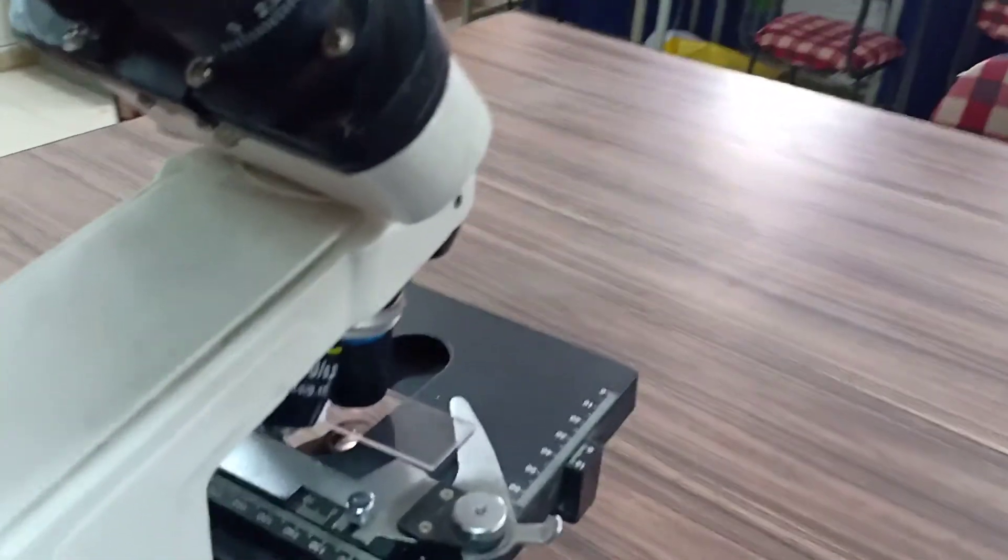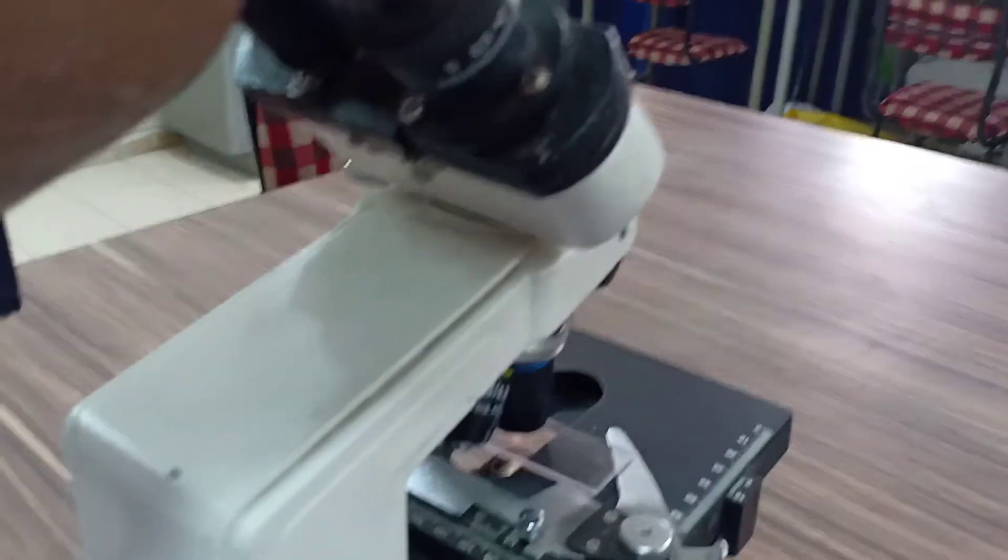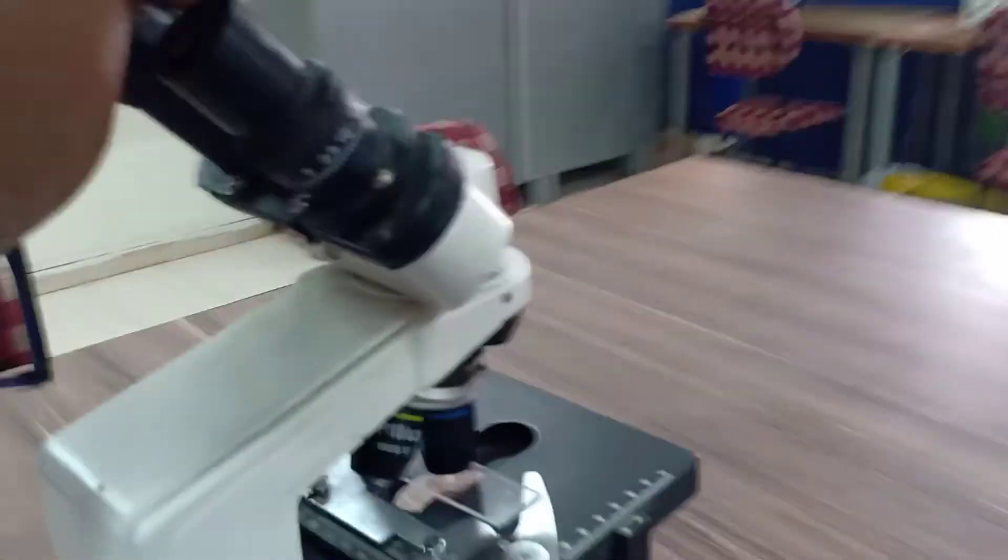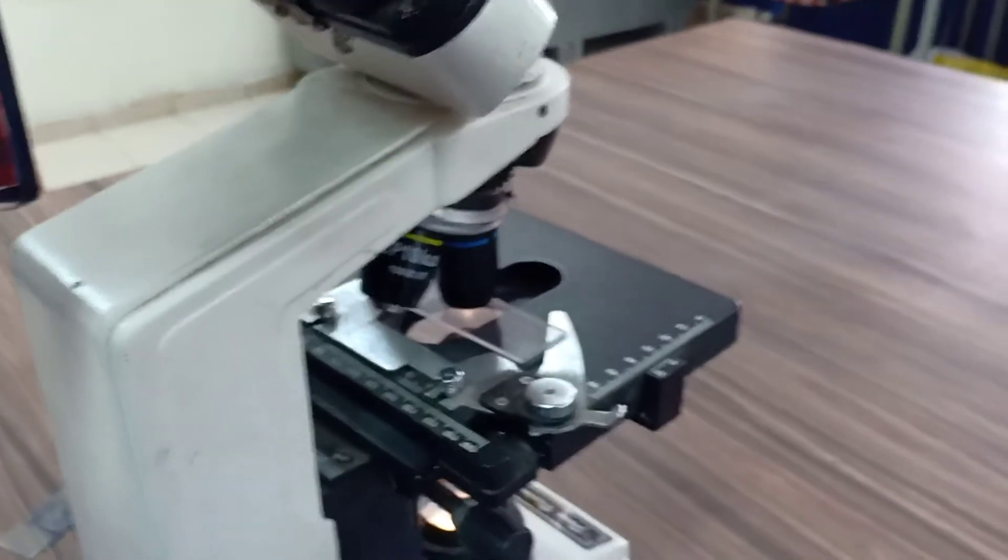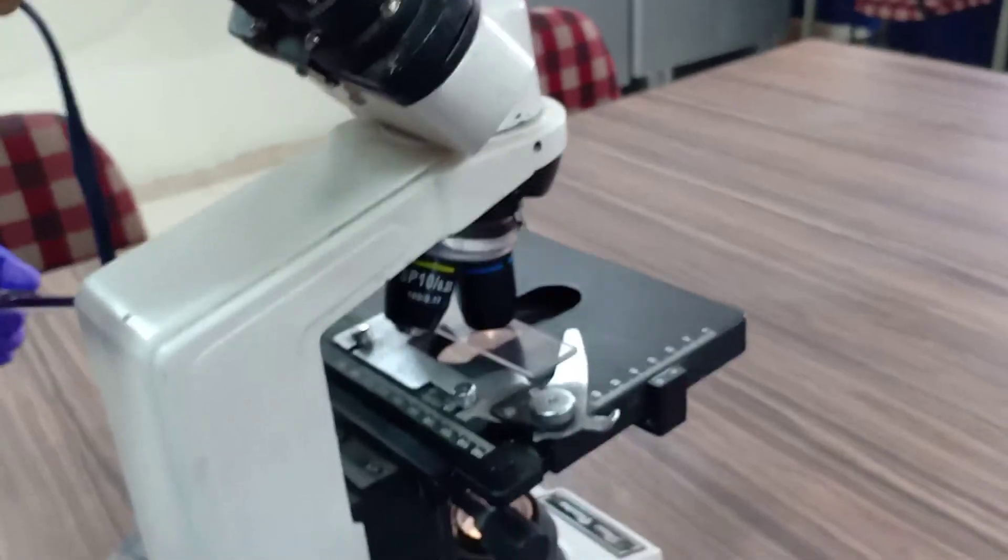You can observe through the microscope and you can take a fixed slide. With the help of that, take a photograph with the help of your mobile camera. You can take a result. That is the process of gram-staining.